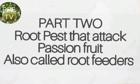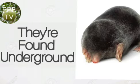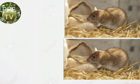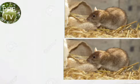In part two we deal with pests that affect the roots of Passion Fruit — they are called root feeders. Number one, we have moles or rodents. These pests are found underground where they feed on the roots of the vine, leaving only the hanging outer part of the vine.